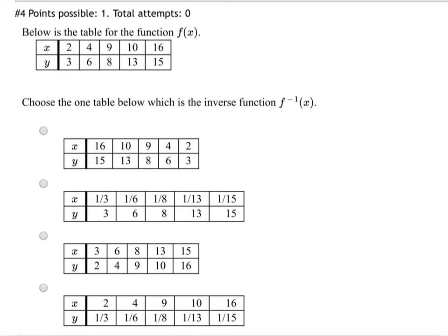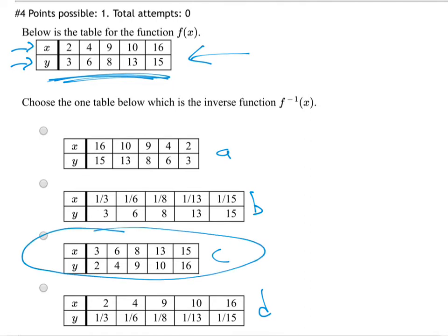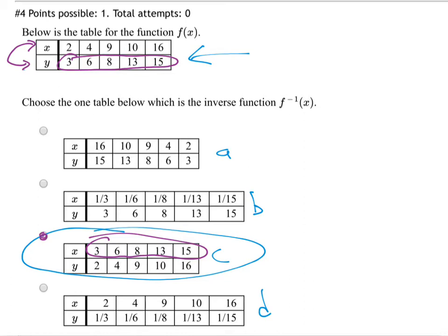Below is the table for a function — choose which table is the inverse. Here are the x's and y's, the inputs and outputs. Which of those four — a, b, c, or d — is the inverse table? The answer is the one that's just switched the x's and y's: they've taken the top row and the bottom row and flipped them. The 3, 6, 8, 13, 15 was the bottom row — now it's the top. That's the inverse function: a switching of x's and y's, a switching of inputs and outputs.